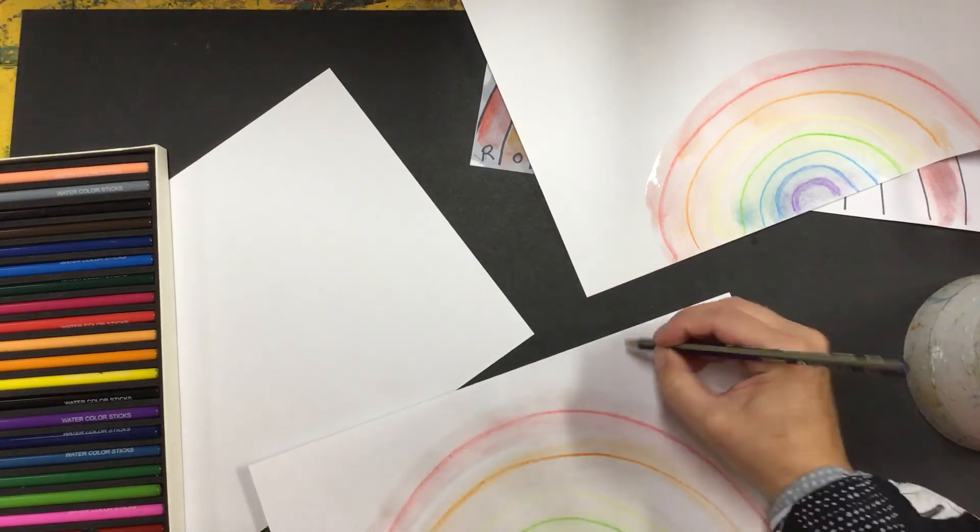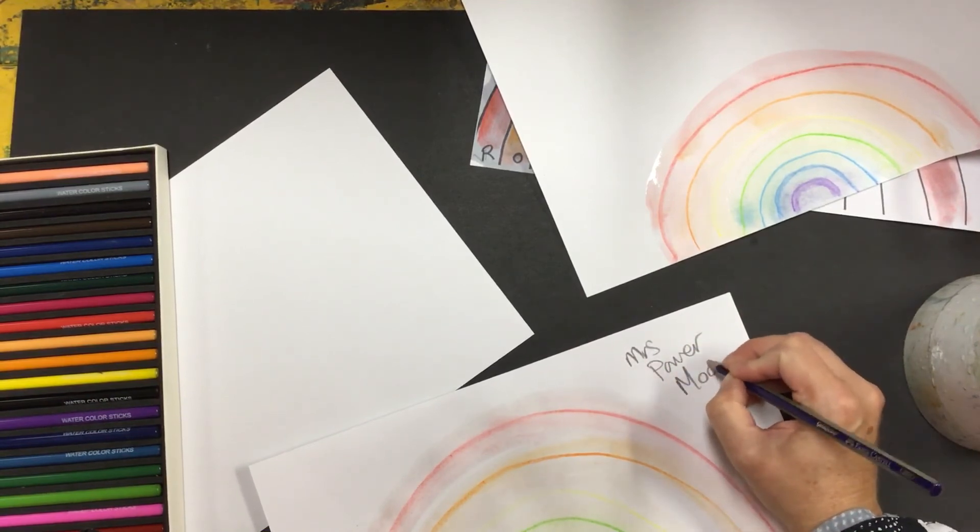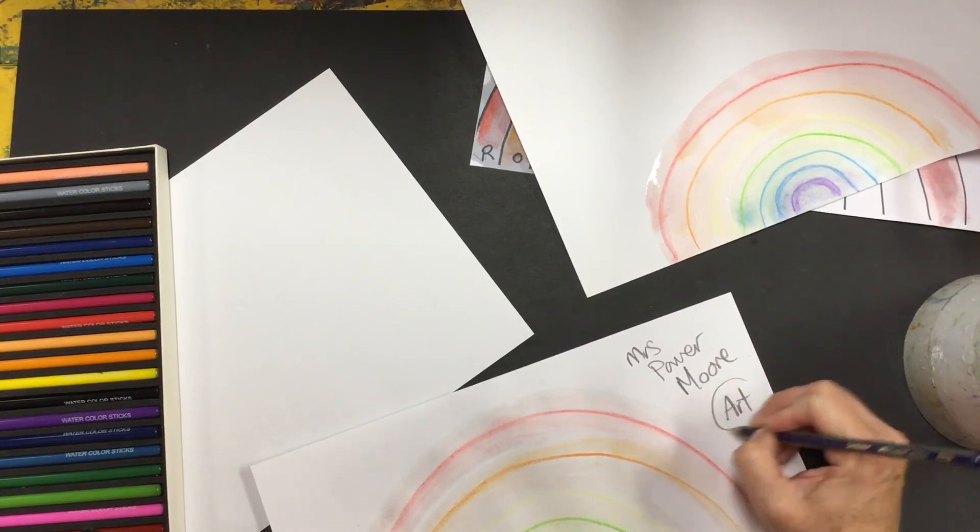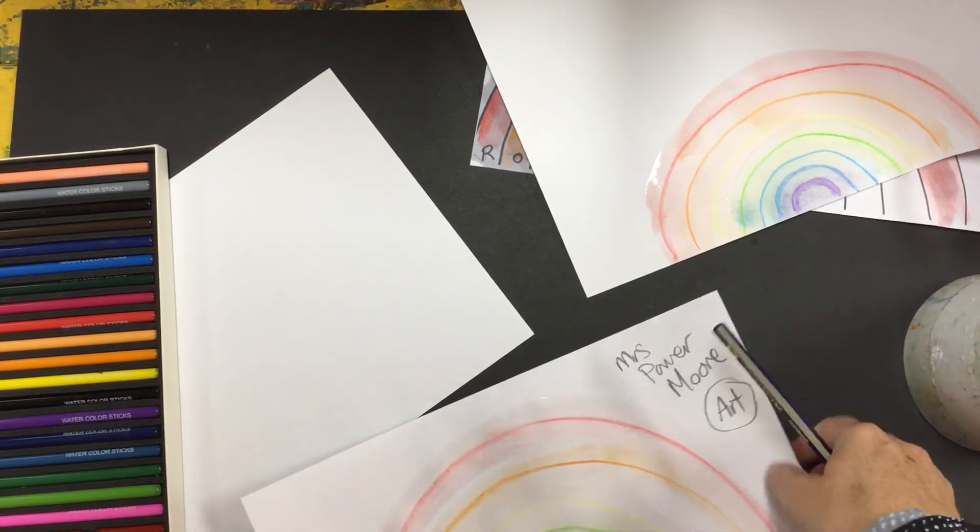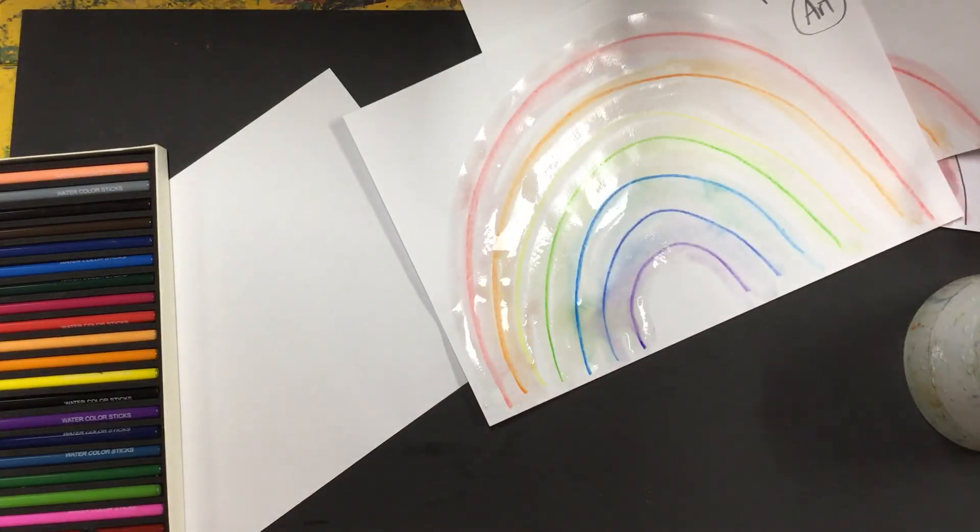I'm going to put my name on it. Mrs. Palamore. And my grade. My grade is art because I'm the art teacher. Then I can put it on the drying rack. Have fun doing your ROYGBIV rainbows.